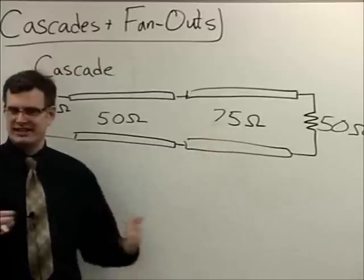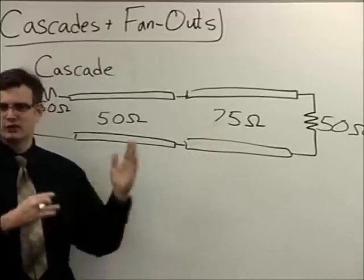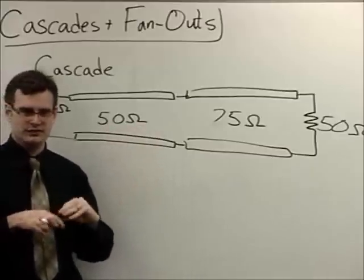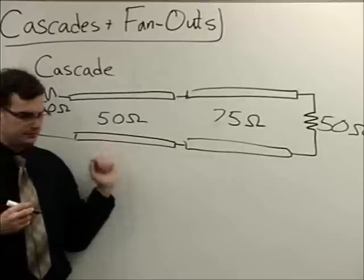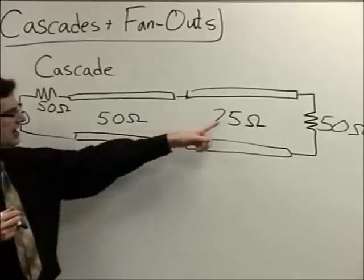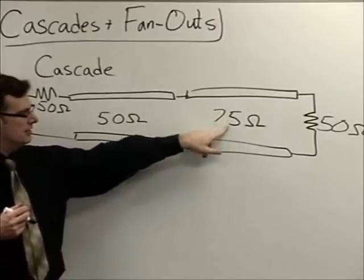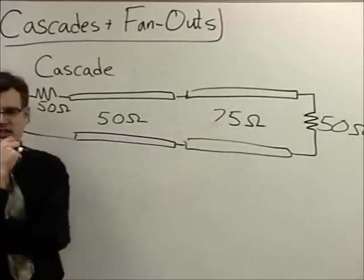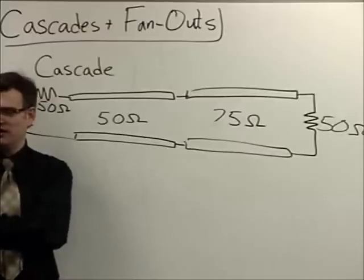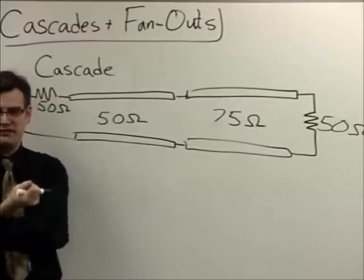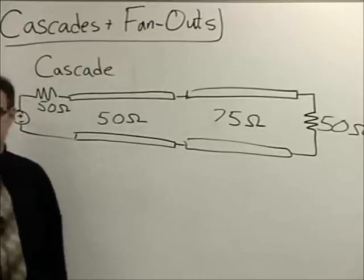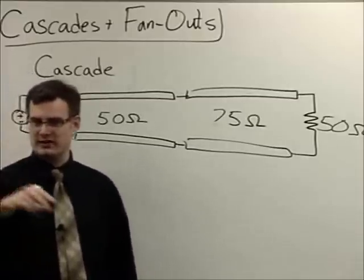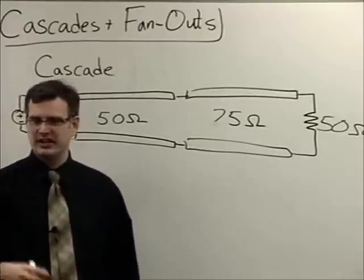In coaxial cables, there are several different standards of impedance. 50 ohms is usually used for high UHF and microwave frequencies, and 75 ohms is typically used in lower-frequency, long-distance cable TV applications. The black cable that comes in from the cable TV manufacturer into your home is usually a 75-ohm cable, whereas the expensive cable used for microwave measurements is a 50-ohm cable.